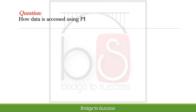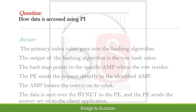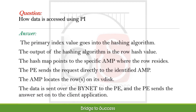How is data accessed using PI? The primary index value goes into the hashing algorithm. The output of the hashing algorithm is the row hash value. The hash map points to the specific AMP where the row resides. The PE sends the request directly to the identified AMP. The AMP locates the row on its disk. The data is sent over the bynet to the PE, and the PE sends the answer set on to the client application.